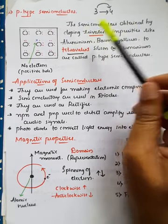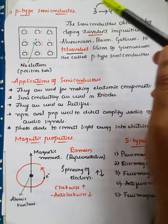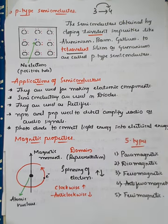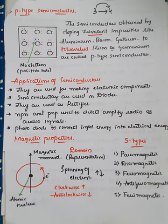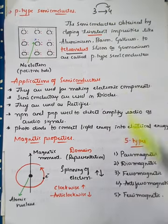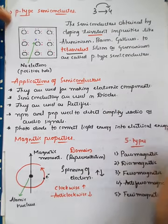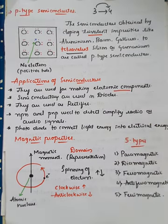If you add five to four it is n-type; if you add three to four it is p-type. For two marks: the semiconductor obtained by doping trivalent impurities like aluminium, boron, gallium to tetravalent is called p-type. For further applications of semiconductors: they are used for making electronic components — instruments like TVs, fridges, and mobiles use semiconductors because they can conduct and also act as insulators sometimes. Their conductivity lies between insulators and conductors, so they are used in electronic components.